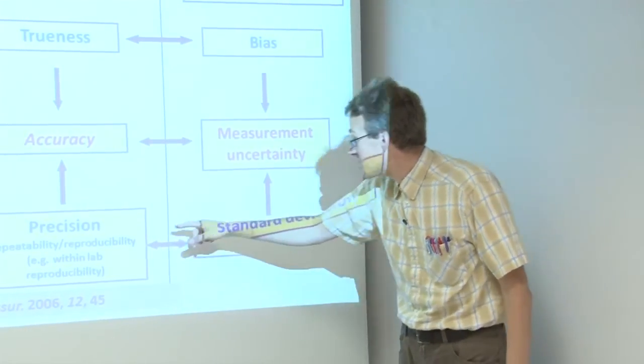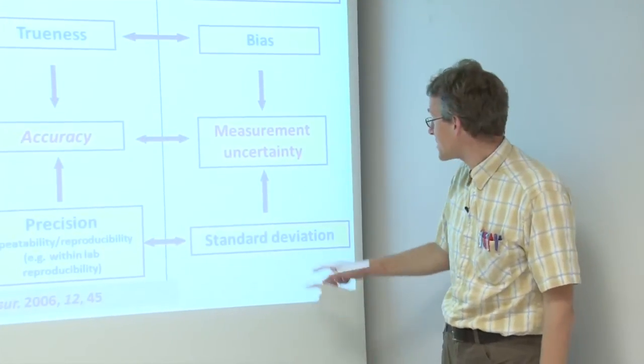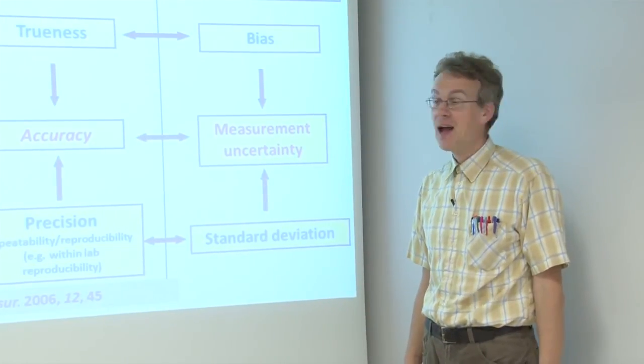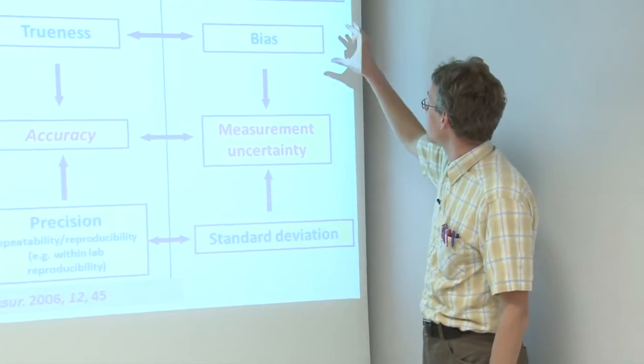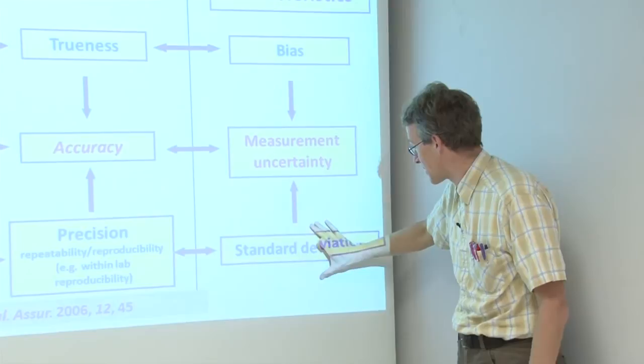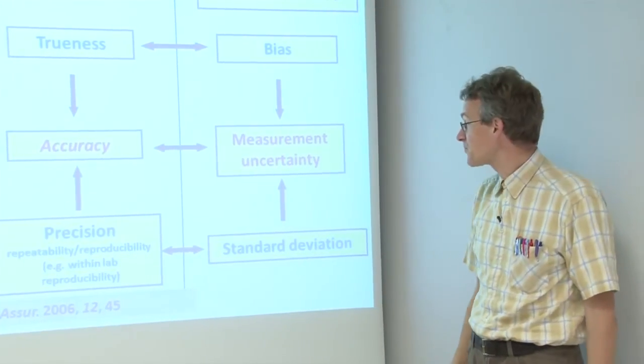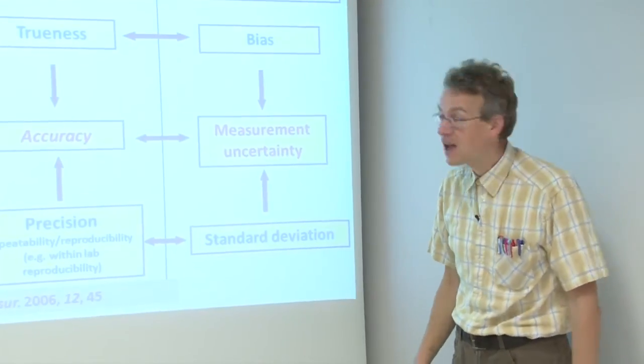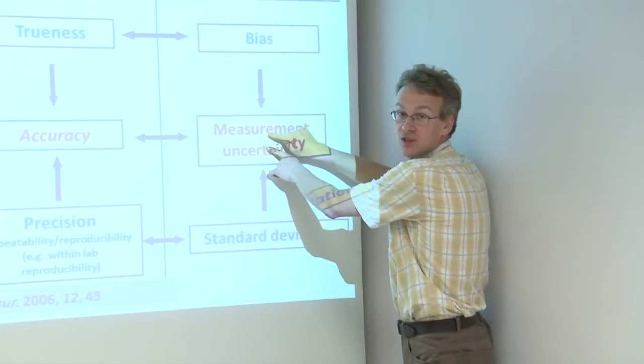And precision numerically is expressed by standard deviation of the repeated measurement results. And now it is possible to combine the estimate of bias and the precision standard deviation, if they have been found in a correct way, into measurement uncertainty.